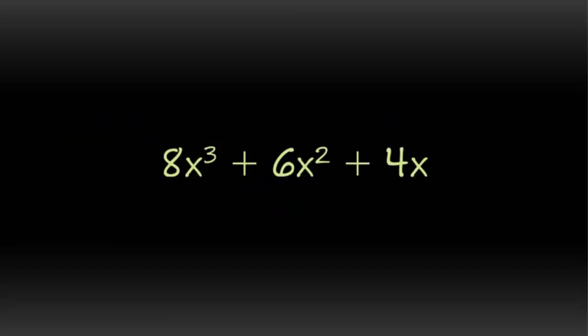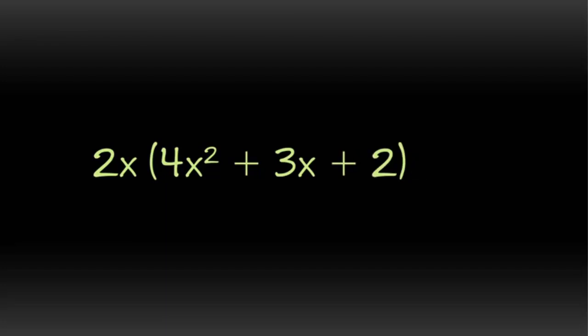For instance, in the expression 8x cubed plus 6x squared plus 4x, we have the common term 2x. In each of these, we can factor out a value of 2x. So 8x cubed is the same thing as 2x times 4x squared. 6x squared is the same thing as 2x times 3x. And 4x is the same thing as 2x times 2. So I'm going to factor my 2x out all the way, and then I'm left with 4x squared plus 3x plus 2.